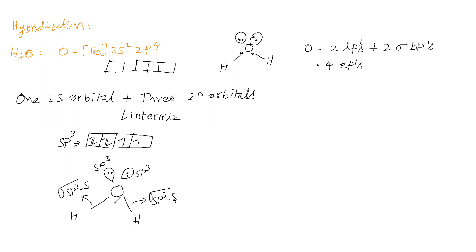So in water, the central atom is oxygen. Oxygen has sp³ hybridization. It has two lone pairs in two sp³ hybrid orbitals and two sigma bonds. The sigma bonds are formed by overlapping of sp³ of oxygen and s orbital of hydrogen. Both bonds have the same nature, therefore same bond strength and same bond length. That means in water only one bond length is possible. This is the hybridization of water.